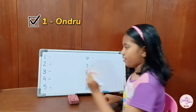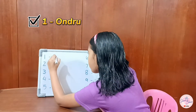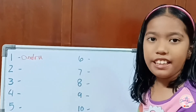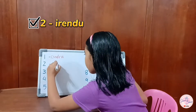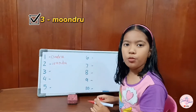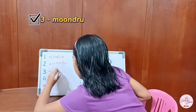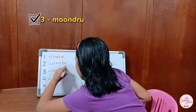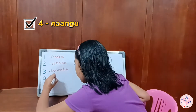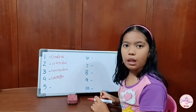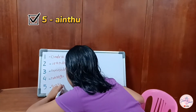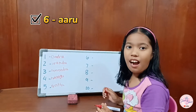One in Tamil is ondru. Two in Tamil is ondru. Three in Tamil is ondru. Four in Tamil is ondru. Five in Tamil is ondru. Six in Tamil is ondru.